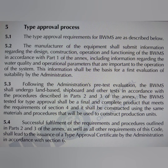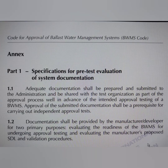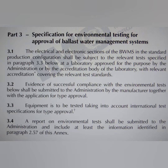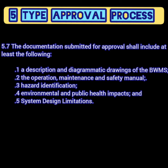Chapter 5 is the type approval process. As the name suggests, it tells you how to get approval for the ballast water management system, and it gives reference to parts 1, 2, and 3 of the annex. Part 1 is specifications for pre-test evaluation of the system documentation; part 2 is test and performance specification for approval; part 3 is specifications for environmental testing for approval. There are five documents required to be submitted: first, description and diagrammatic drawing of the system; second, operation, maintenance and safety manual; third, hazard identification; fourth, environmental and public health impact; fifth, system design limitation.